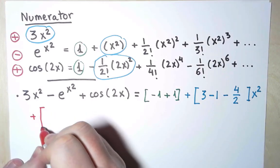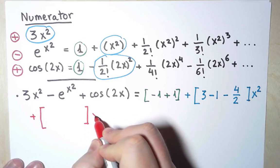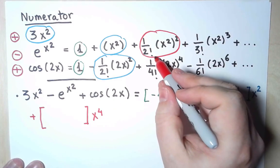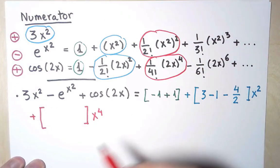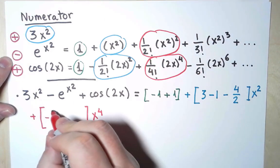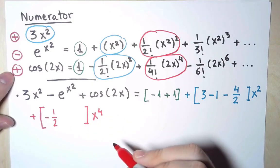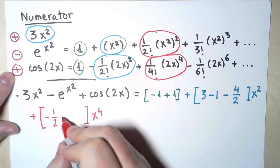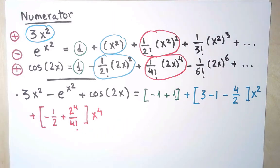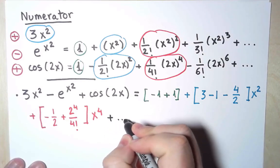Next, I have some terms with x⁴. This term, and this term. And the coefficient I get now is 1/3! - (-1/2). Great! This is the first term that's not going to vanish. This is not 0. So that's the only term I need.